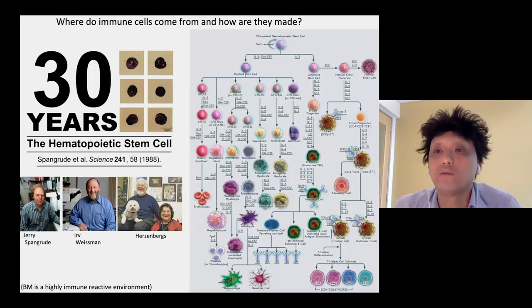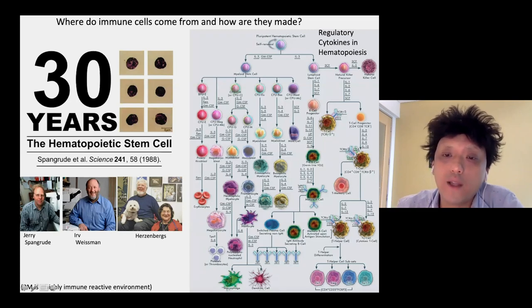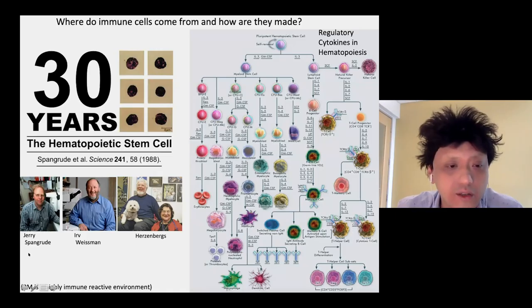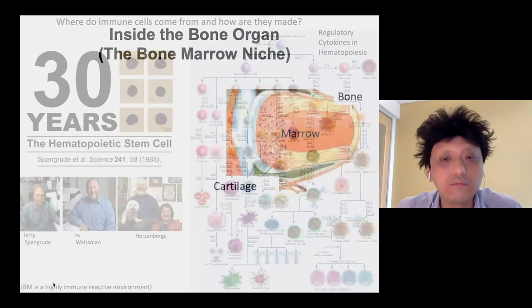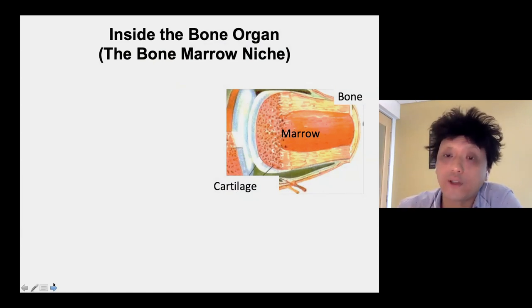My initial question in approaching this field was: what is the source of these cytokines? Where does the external regulation for the blood-forming stem cells come from? To address this question, I looked into where hematopoietic stem cells reside in adult vertebrates.